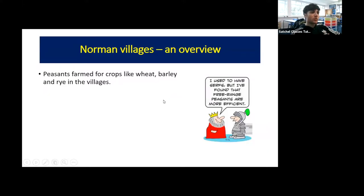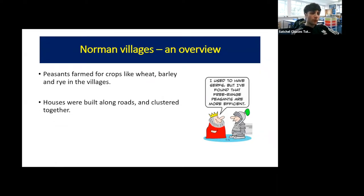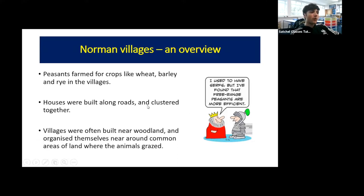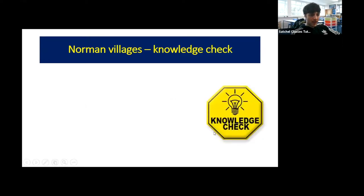In terms of crops, they typically farmed wheat, barley, and rye. The houses were built along the roads and tended to cluster together. The villages were often built near woodland and organized around that common land where the animals all grazed together.